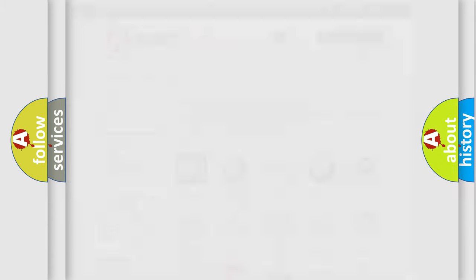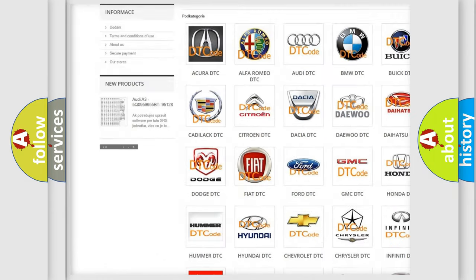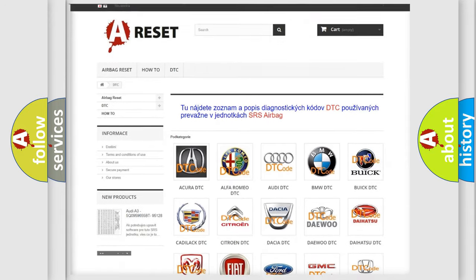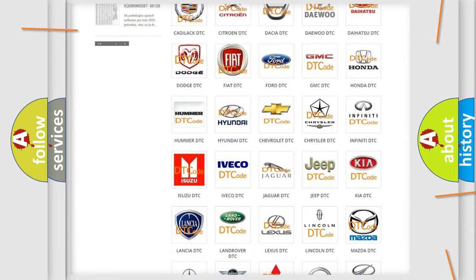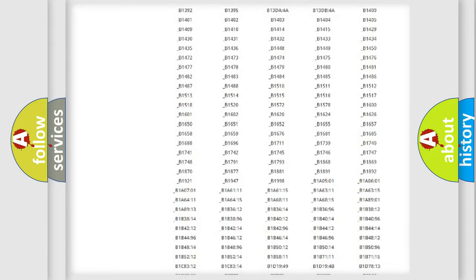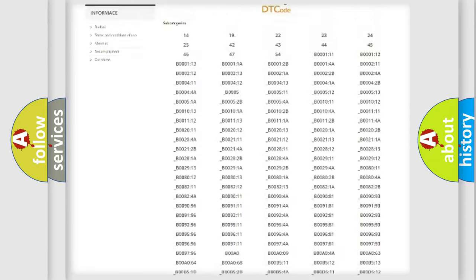Our website airbagreset.sk produces useful videos for you. You do not have to go through the OBD2 protocol anymore to know how to troubleshoot any car breakdown. You will find all the diagnostic codes that can be diagnosed in Jeep vehicles.